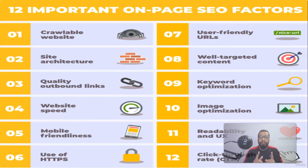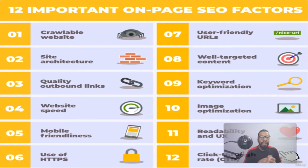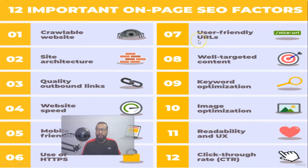These are the 12 important on-page SEO factors: scrollable website, site architecture, quality outbound links, website speed, mobile friendliness, use of HTTPS, user-friendly URLs, well-targeted content, keyword optimization, image optimization, and click-through rate.